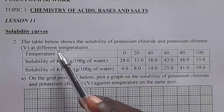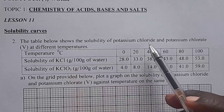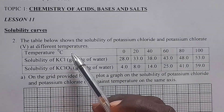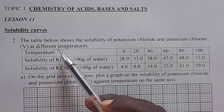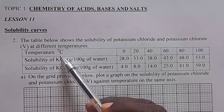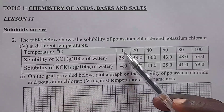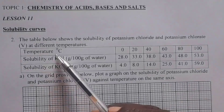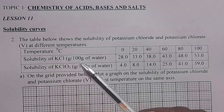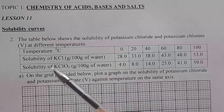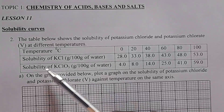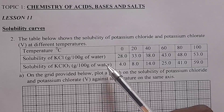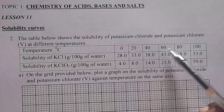The table below shows the solubility of potassium chloride and potassium chloride 5 at different temperatures. We are having temperature in degrees Celsius from 0 all the way to 100 degrees Celsius, the solubility of potassium chloride in grams per 100 grams of water, and the solubility of potassium chloride 5 in grams per 100 grams of water. These are the values given.